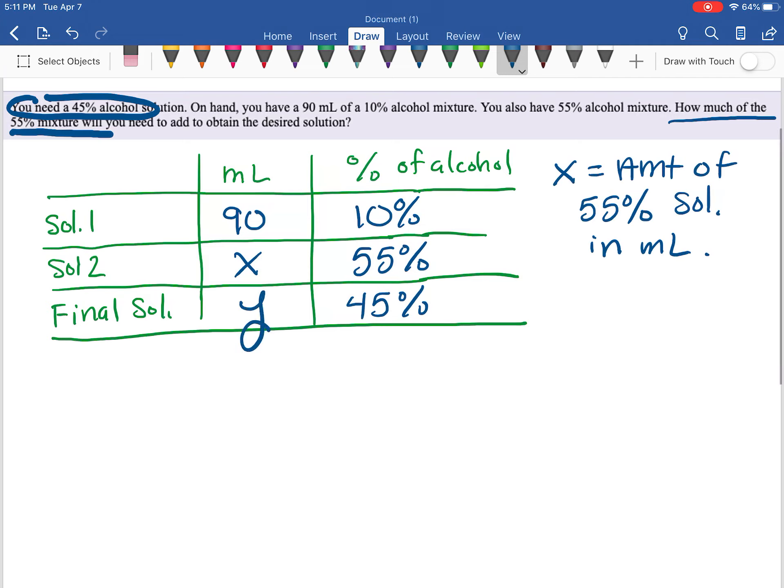Now the problem doesn't tell us what the final solution is, so I'm going to label that another variable. We'll call it y. Y is the amount of the final solution in milliliters.